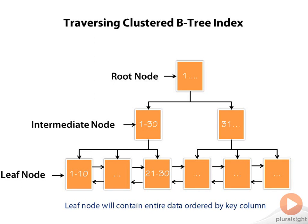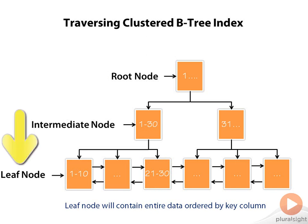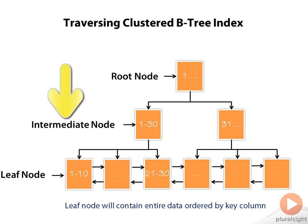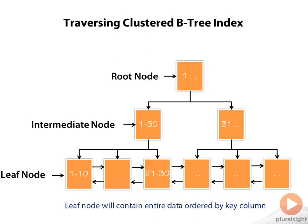To better understand what we just discussed, let's try to traverse the cluster B-tree index. For example, we want to retrieve row number 22. When MySQL engine wants to get row number 22, it will have to traverse from root node to intermediate node and end up on the leaf node. It will go to the root node and ask where row number 22 belongs. The root node will send it to the intermediate node on the left side, which contains the location for rows 1 to 30. MySQL engine will then read this intermediate node and figure out where exactly row 22 belongs, and the intermediate node will point it to the particular leaf node for row number 22.